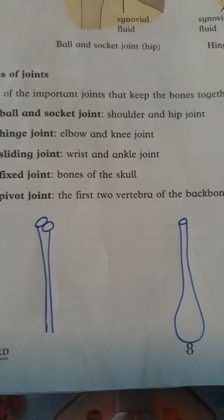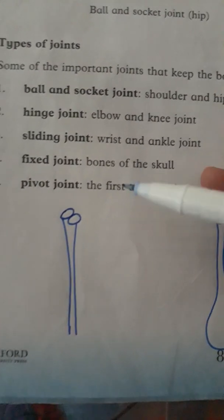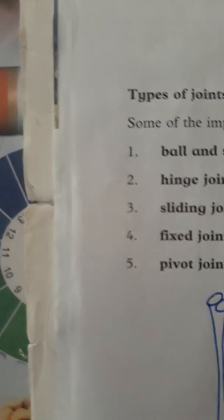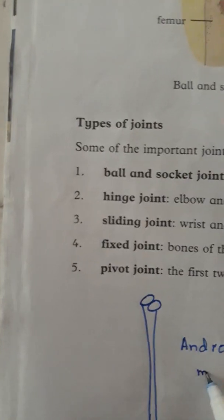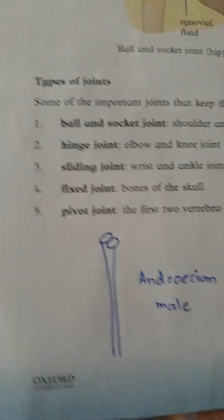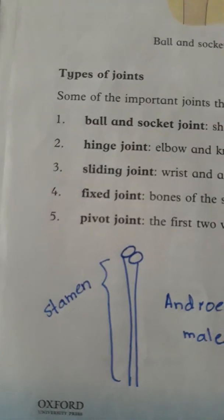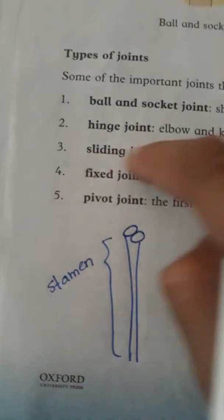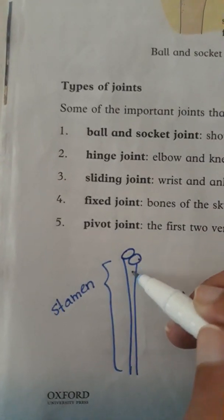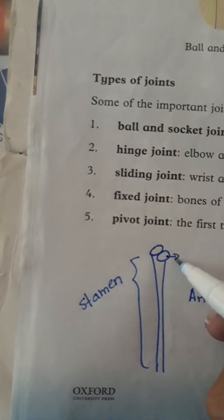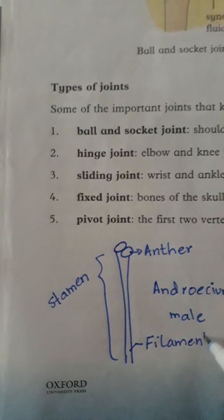Today you have to observe the flower. The male part is called androecium. The stamen further consists of two parts: the upper part and the lower thin filament. The upper part is called the anther, and the lower part is called the filament.